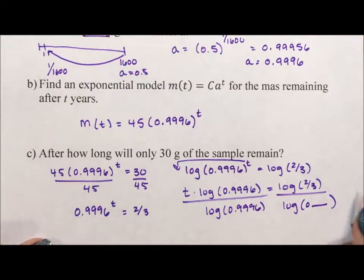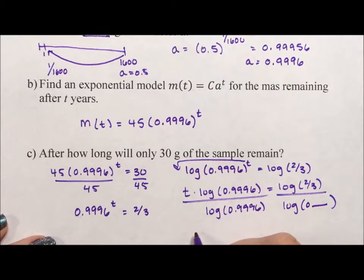Saving myself a little writing, I know what I'm going to type into the calculator. When I type this into the calculator, I get that t is equal to 1013.46 years.